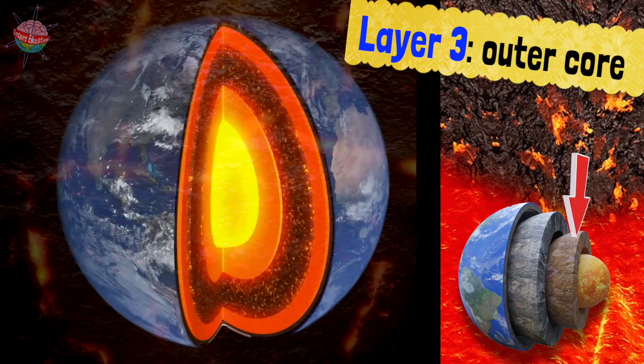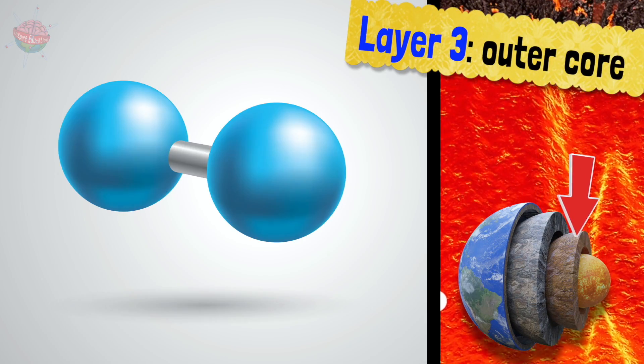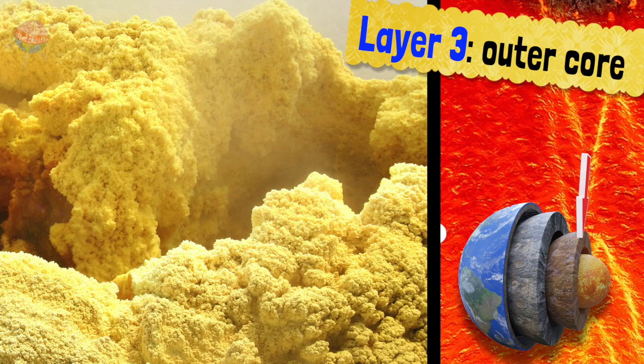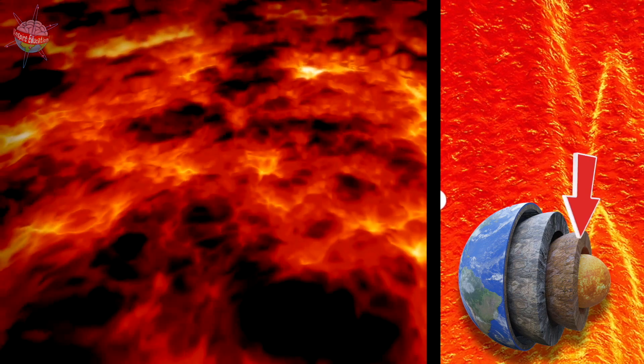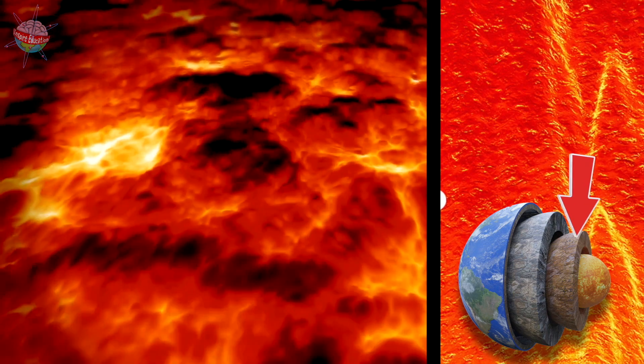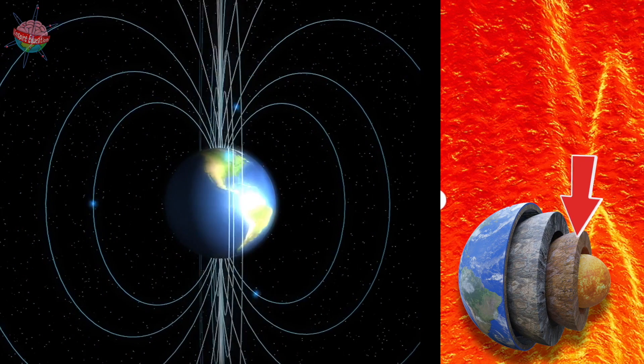The liquid outer core is made of the elements iron, oxygen, nickel and sulphur. It flows around the inner core. Because iron and nickel are magnetic, this movement creates the Earth's magnetic field.